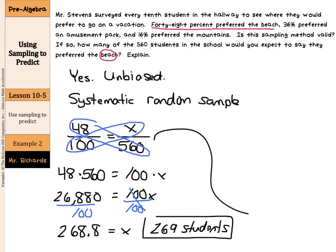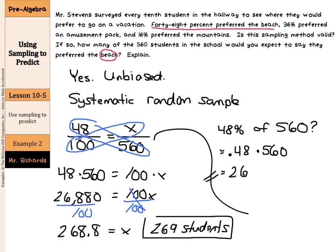Another way to solve this type of question: 48% said they preferred the beach, so what is 48% of 560? You can take 0.48 and multiply it by 560. That's another way to solve this question, and it also gives a result of 268.8, which still gets us to 269 students.